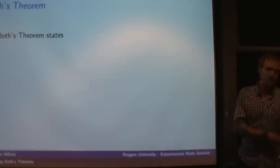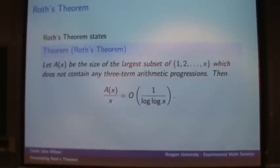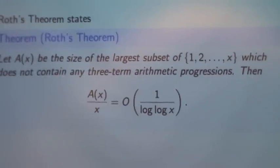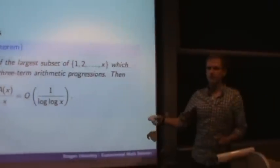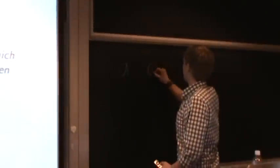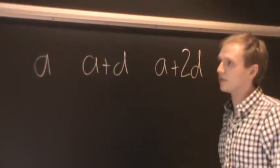So what is Roth's theorem? Roth's theorem states that if A(x) is the size of the largest subset of 1 to x which does not contain any three-term arithmetic progressions, then A(x) over x is big O of 1 over log x. What does this mean? Well, hopefully you know what a three-term arithmetic progression is. That's just three numbers with constant difference between any two consecutive terms, so just something of the form a, a plus d, and a plus 2d.